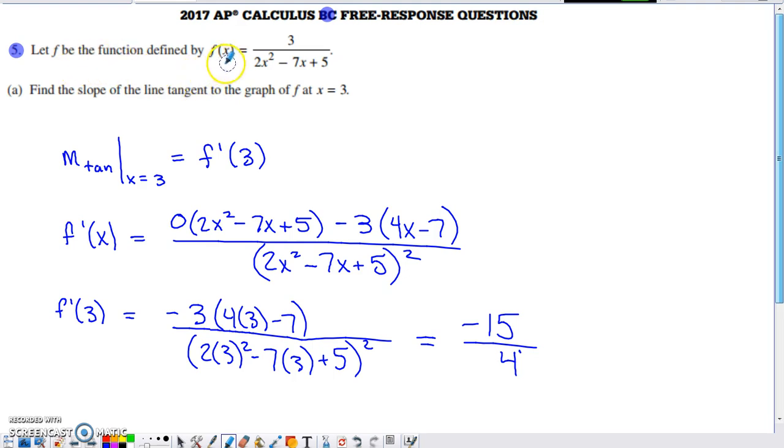we have a function f defined by this rational expression. So we've got a constant value of three in the top and then the quadratic polynomial in the bottom.